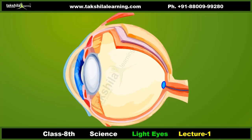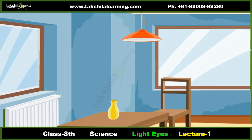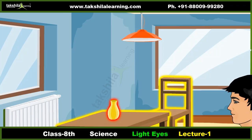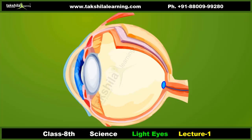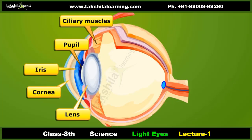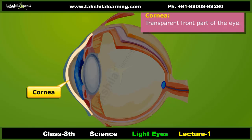The eye is nearly spherical in shape with a diameter of about 2.3 centimeters. We are able to see the objects around us only when the light emitted or reflected from them enters our eyes. It sends the signals of the image to our brain via optic nerves. Let us study the eye's structure in detail.